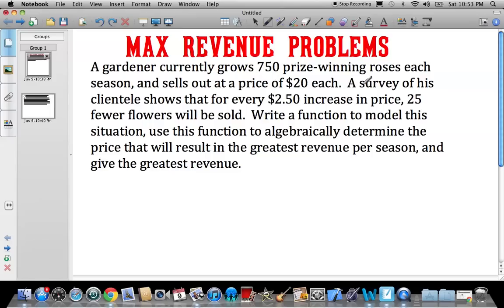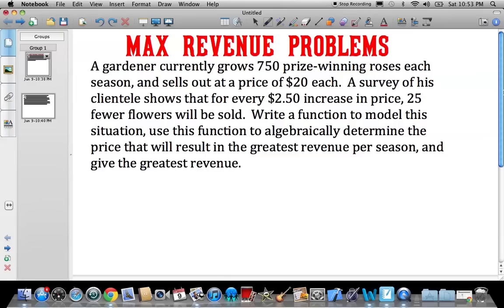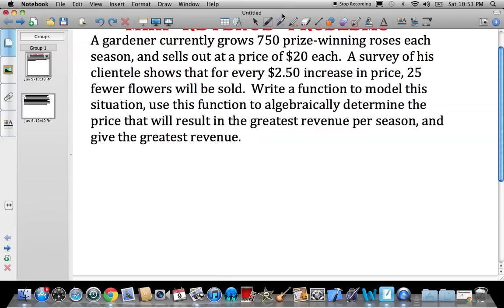So this one, you have a gardener who is selling roses and usually sells out at a price of $20 each. He decides that he's going to increase his price $2.50, and a survey says that he's going to get 25 fewer flowers sold. So we're trying to determine what's going to give him the max revenue.